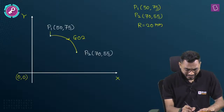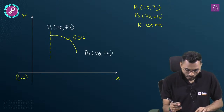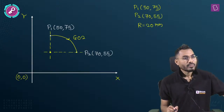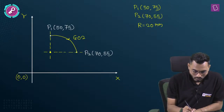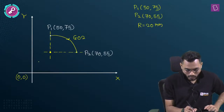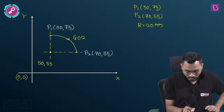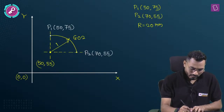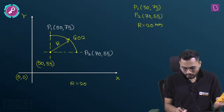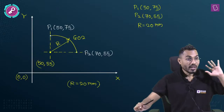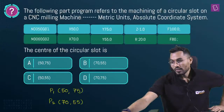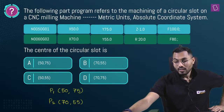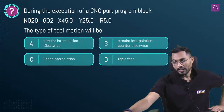The center coordinates are x=50, y=55. Drawing a vertical line from P1 (x=50) and a horizontal line from P2 (y=55), the intersection is (50, 55). Verifying: radius from center (50,55) to P1 (50,75) = 20 mm ✓, and to P2 (70,55) = 20 mm ✓. Answer is C: (50, 55).